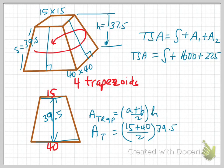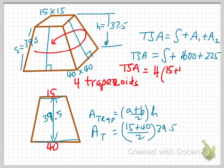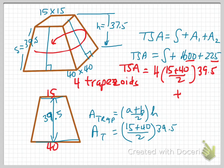Now we're going to take the area of that trapezoid and multiply it by 4. Putting it all together, the total surface area for the frustum of this pyramid is equal to 4 multiplied by (15 plus 40) divided by 2, multiplied by 39.5, plus the top and the bottom — 1,600 and 225. That next calculation is a straight calculation on your calculators.